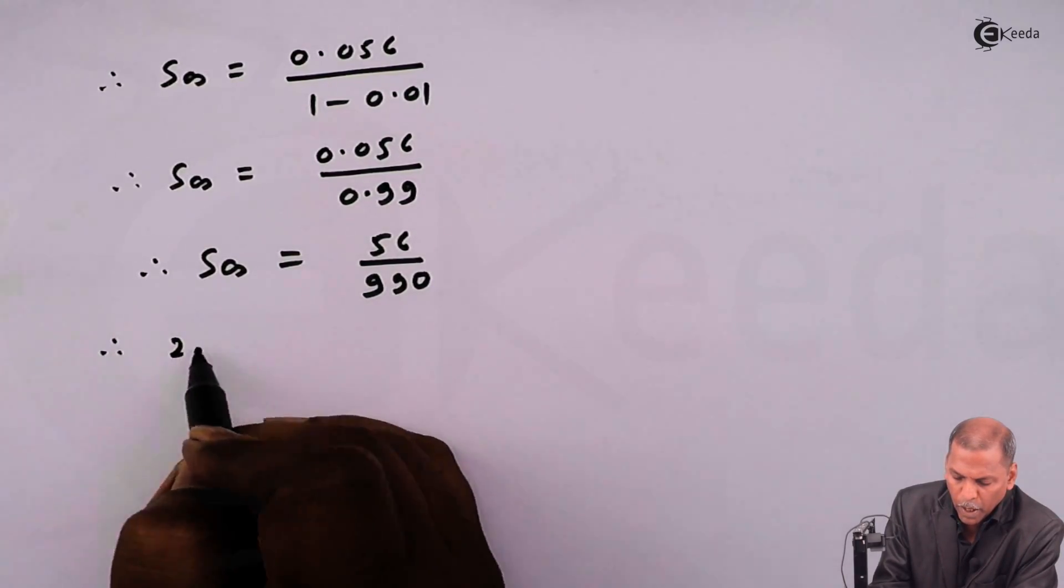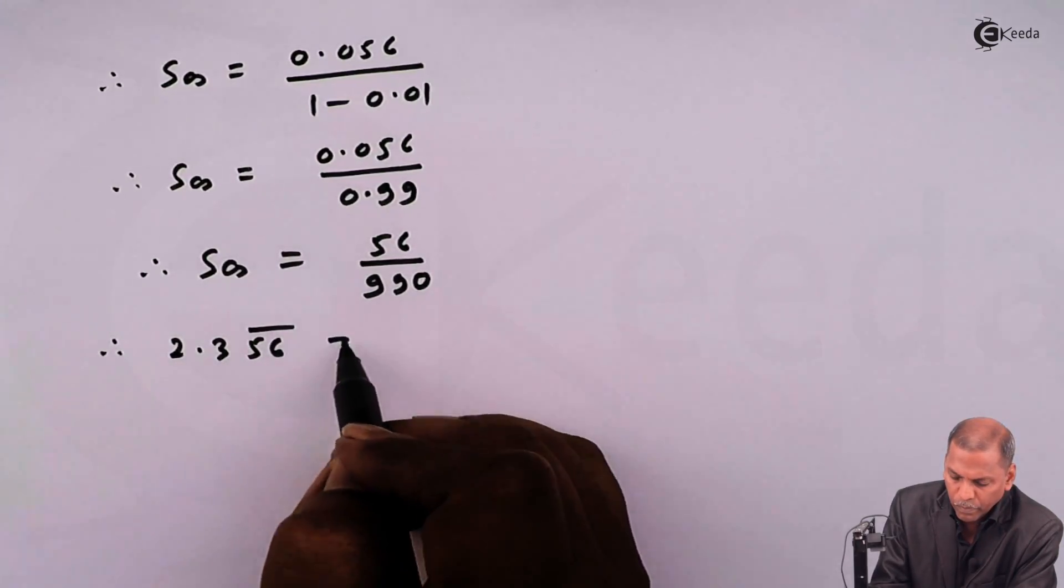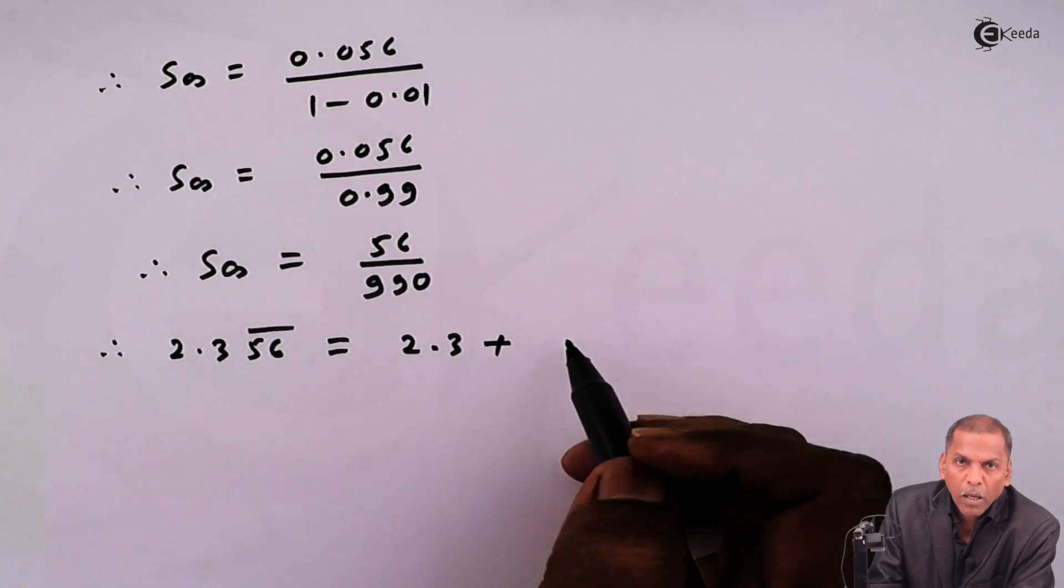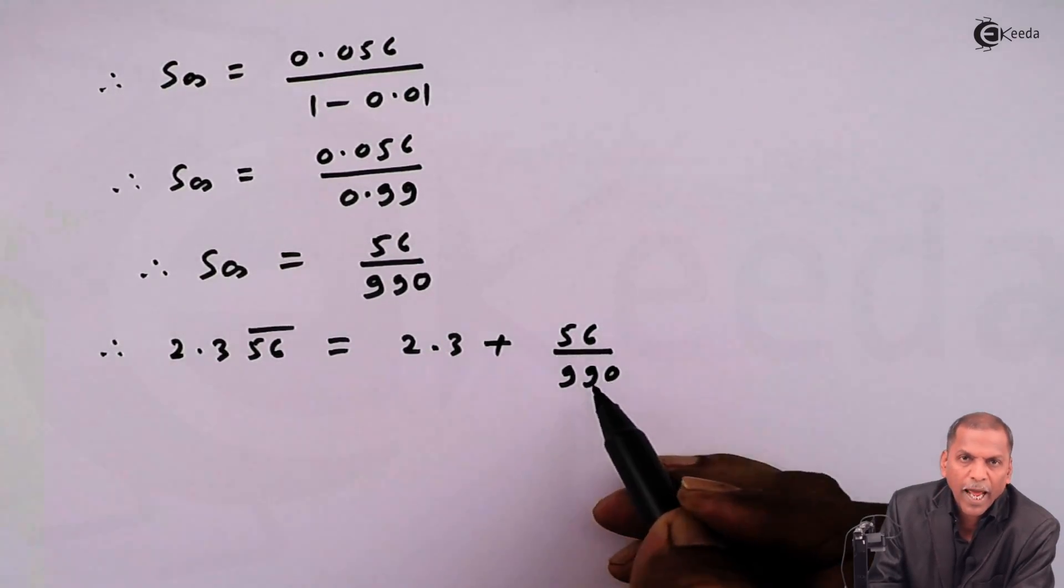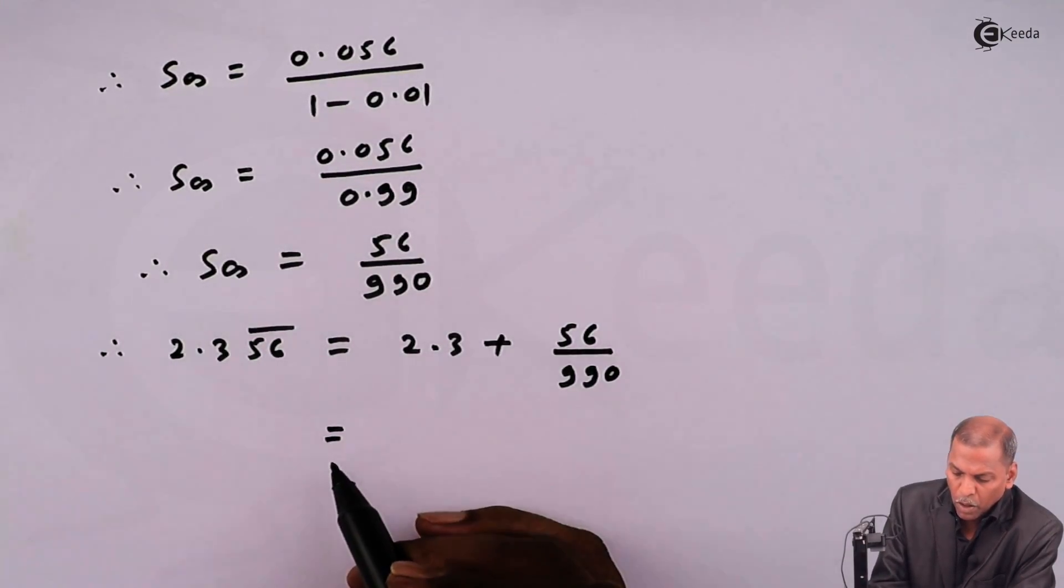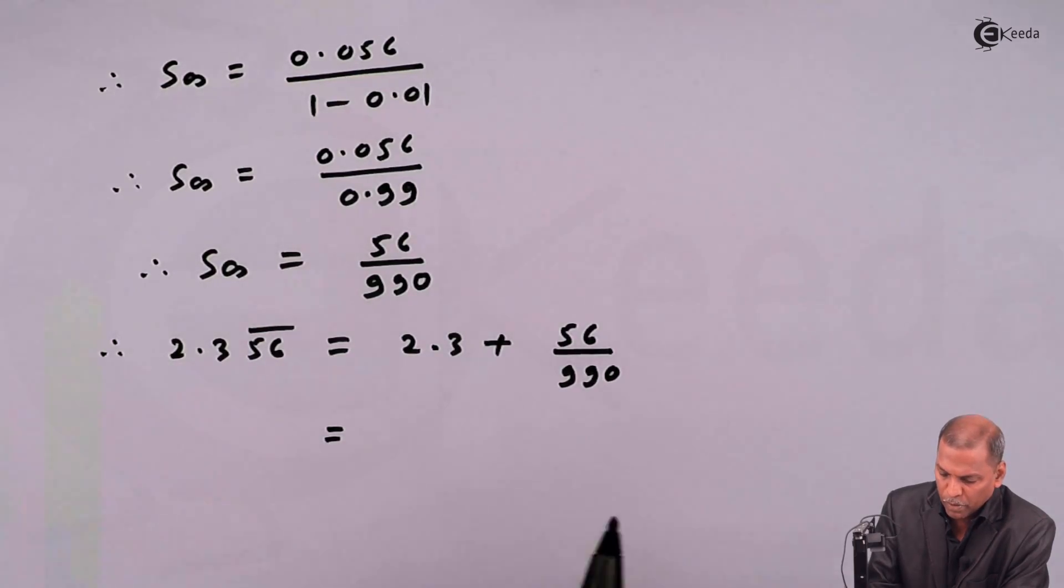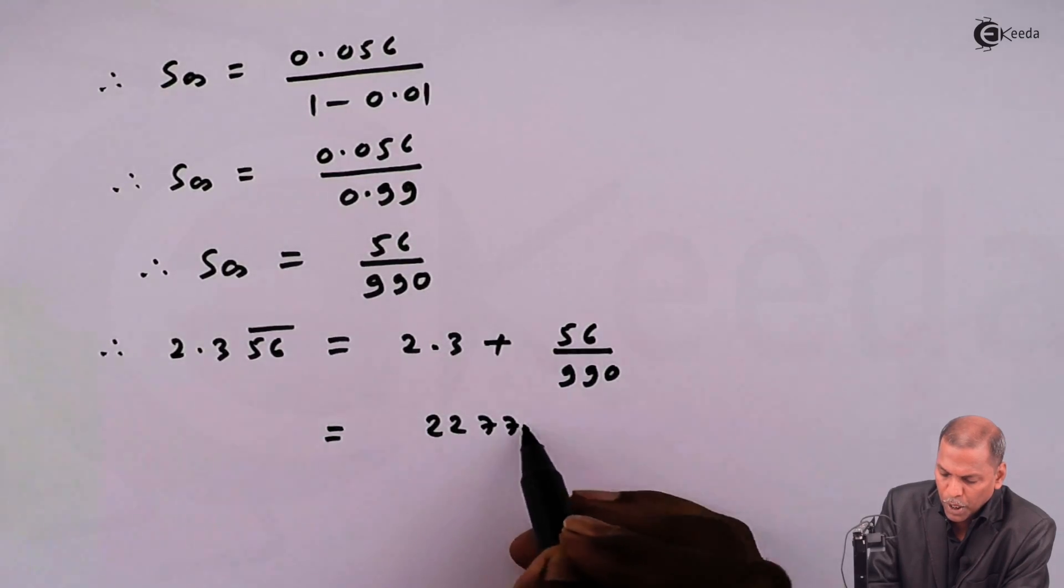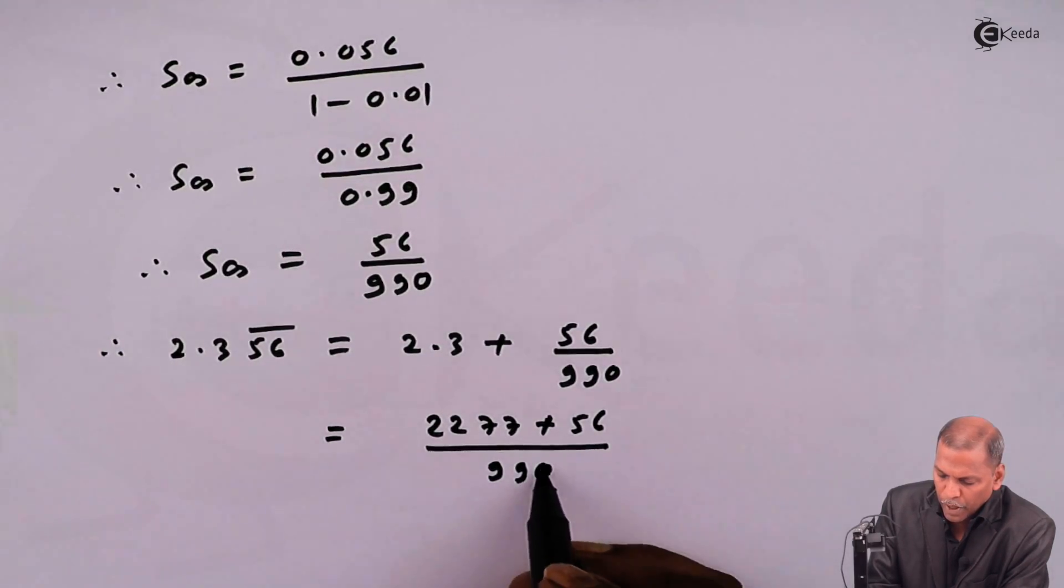Therefore the number 2.356 bar can be written as 2.3 plus s infinity, that is 56 upon 990. Now 2.3 multiply by 990 we get 2277, so on cross multiplying we get 2277 plus 56 divide by 990.